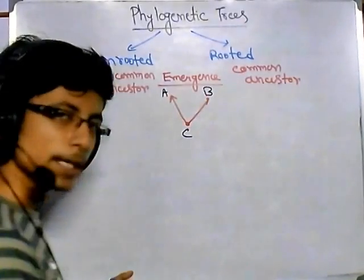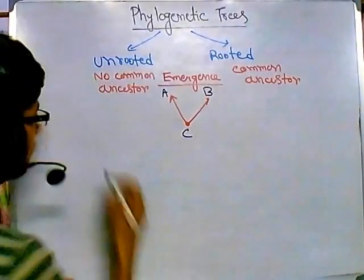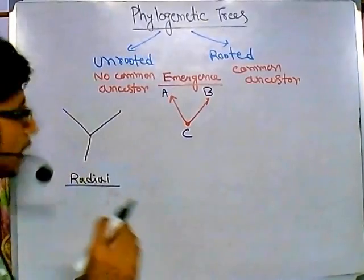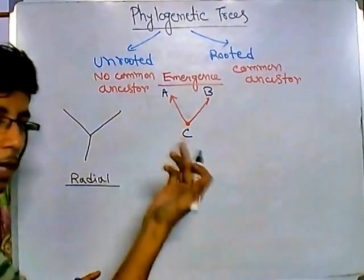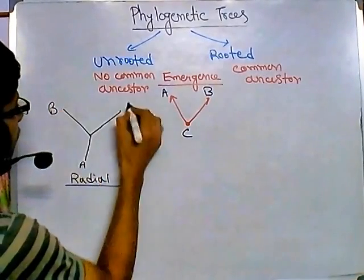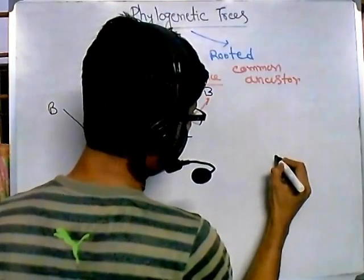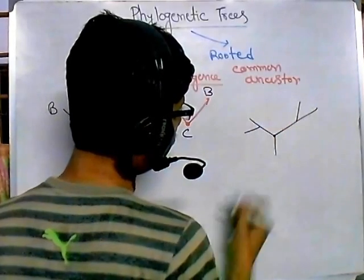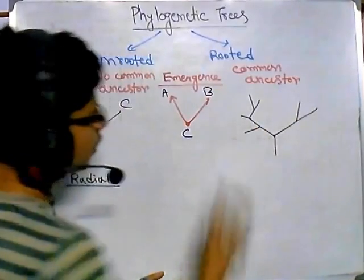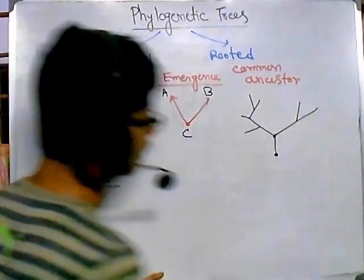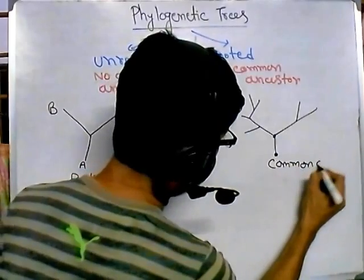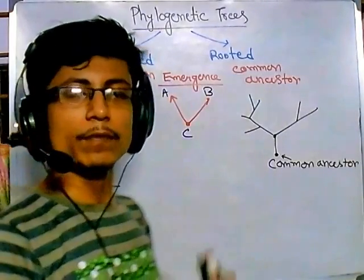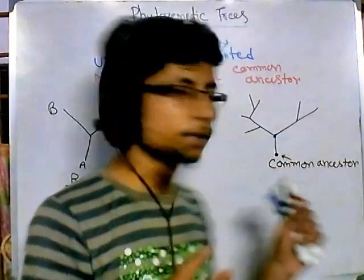In an unrooted tree, we don't know what the common ancestor is, so the tree looks more like a radial structure. With three different species — let's say A, B, and C — you can't point to a common ancestor. For a rooted tree, however, we can identify the common ancestor clearly. So these are the differences between unrooted and rooted types of phylogenetic trees.